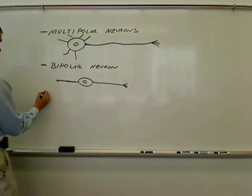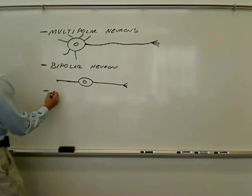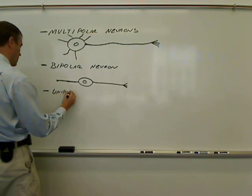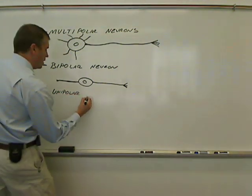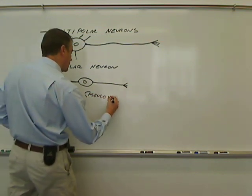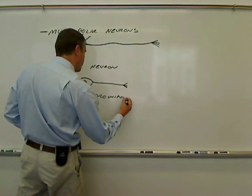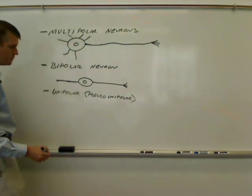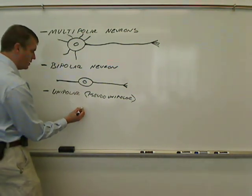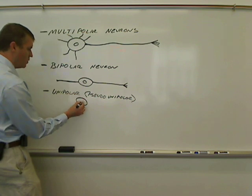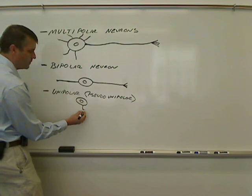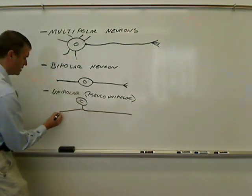So it's bipolar. The next one is unipolar, often called pseudo-unipolar. And I'll explain this pseudo in a second, but first let me show you what they look like. Here's my soma, or cell body, with its nucleus. There's one process coming away from the soma, and that process then splits off.